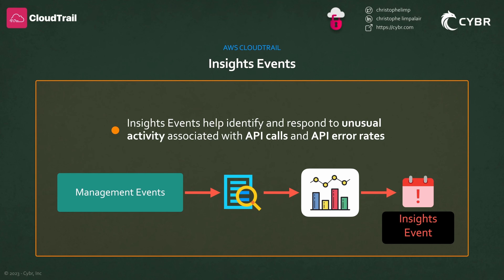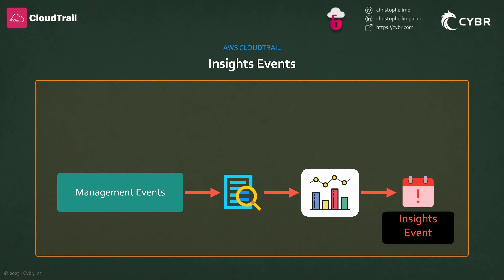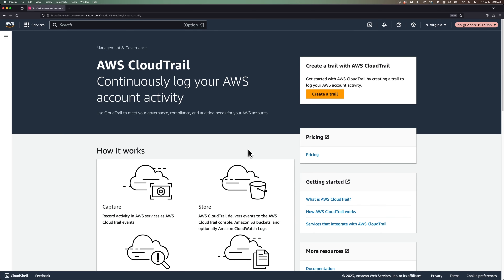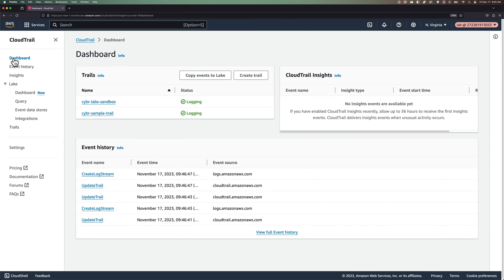We talked about how CloudTrail has a feature called Insights that can help us make sense of log data. Insights uses machine learning to automatically analyze write management events from CloudTrail trails and it looks for anomalies. It does that by creating baselines of normal and expected behavior, and whenever there's a significant change from that baseline, it then generates an insight event. Let's see how we can enable this and use this functionality in the AWS console.